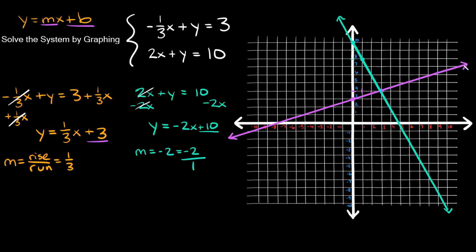As you can see, we have two lines going in completely different directions, and they intersect at a single point. That means this system has one solution because these two lines only share one point in common. Counting along the graph, that intersection point is at (3, 4).